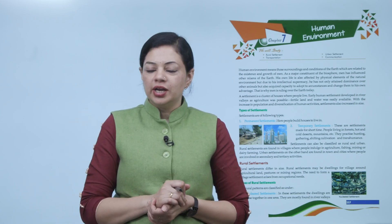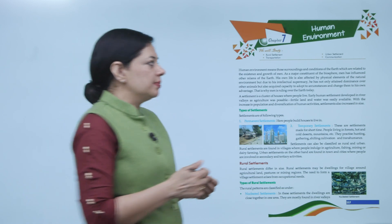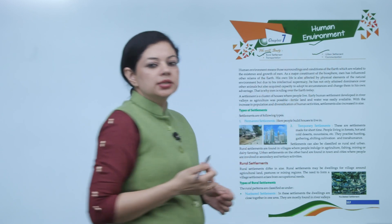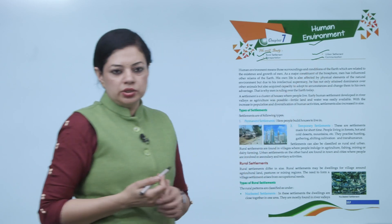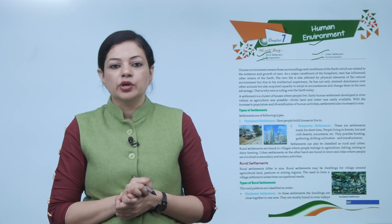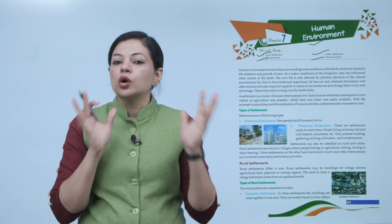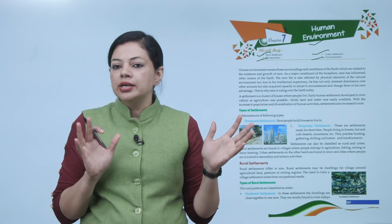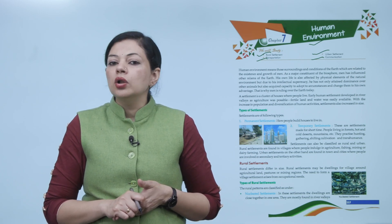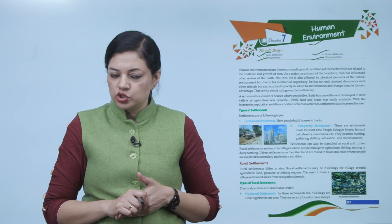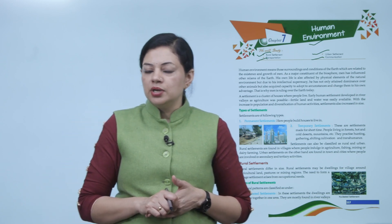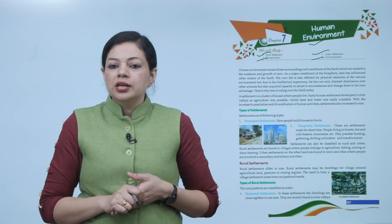Hello students, today we are starting a chapter called Human Environment. In this chapter we will study about rural settlement, urban settlement, transportation, and communication. Human environment means those surroundings and conditions of the earth which are related to the existence and growth of man. As a major constituent of the biosphere, man has influenced other realms of the earth, but due to his intellectual supremacy, he has attained dominance over other animals.